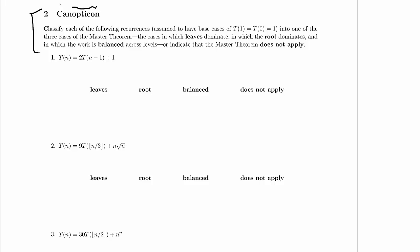By the way, the titles here are not particularly important. Please feel free to ignore the titles. Classify each of the following recurrences, assumed to have base cases of T(1) equals T(0) equals 1, so constant size base cases for small values of n, into one of the three cases of the master's theorem. The cases in which leaves dominate, in which the root dominates, and in which the work is balanced across levels, or indicate that the master theorem does not apply.